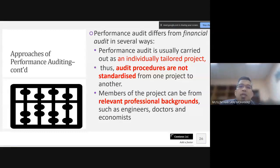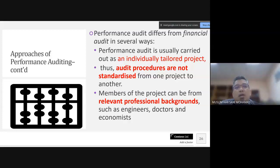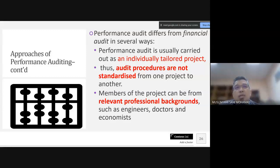Because performance audit is individually tailored, each project targets specific activities within a ministry or agency. For example, procurement is a common target for performance auditing. The Malaysian government's purchase of a submarine — the Scorpène — is one such example. An auditor examining this procurement would test whether the submarine is functioning as intended.